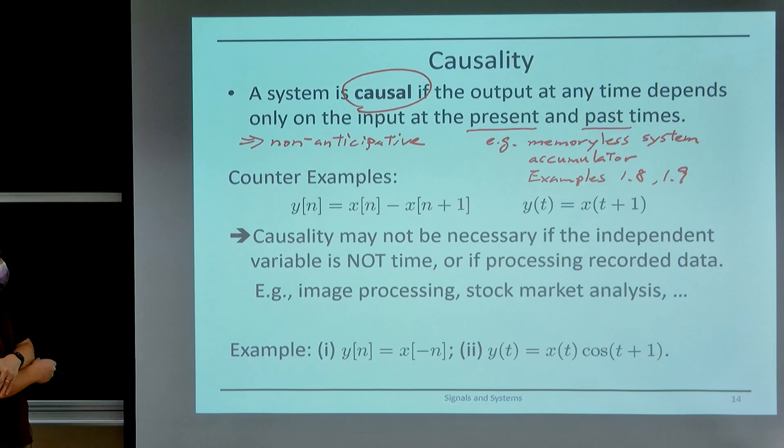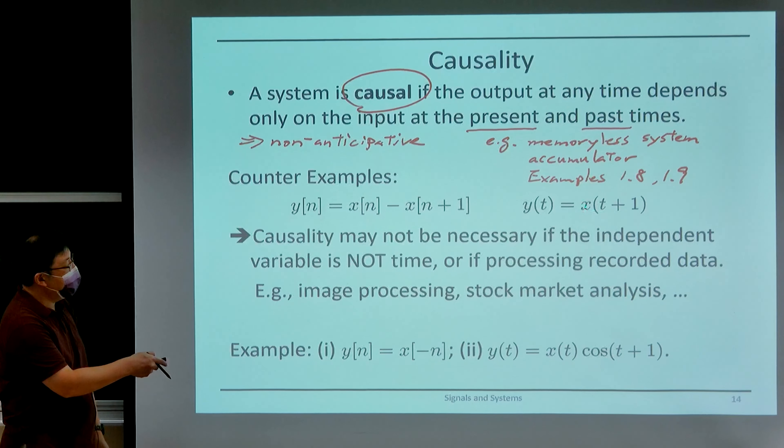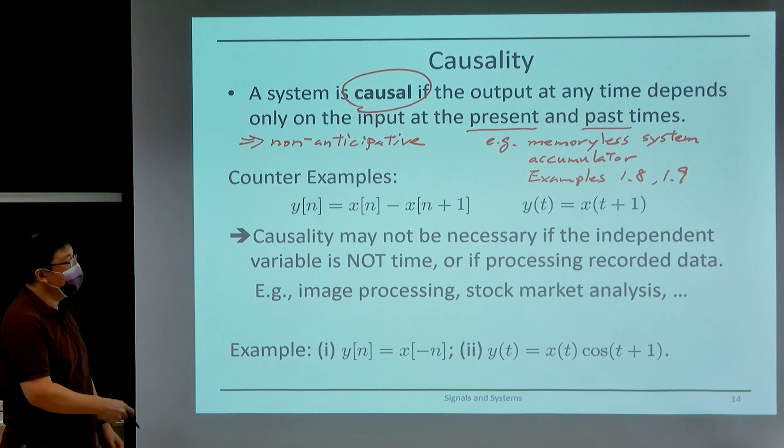Here we have two obvious counter-examples. In this first example, the output at time n depends on the input at time n plus 1, which is a future input. Therefore, this system is not causal. Similarly, in continuous time, the output at time t depends on the input at time t plus 1, which is also a future input, so it is not causal.